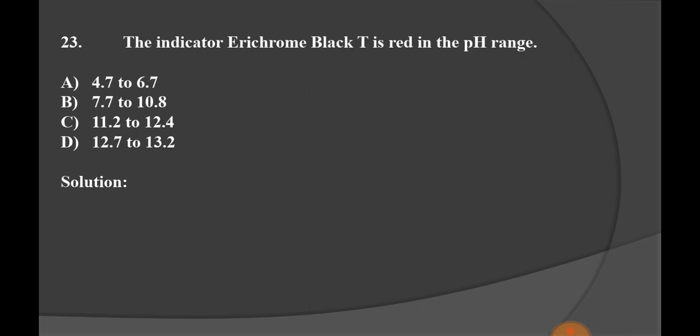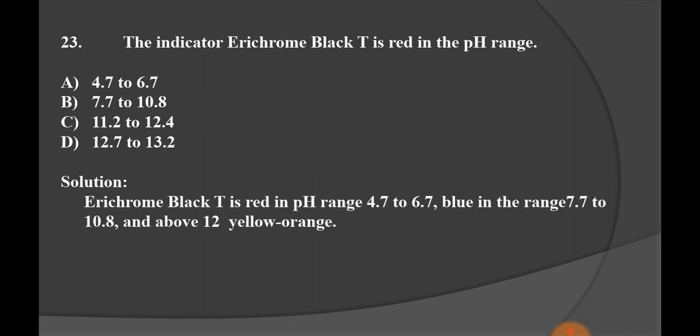The indicator Erichrome Black T is red in the pH range: Option A 4.7 to 6.7, Option B 7.7 to 10.8, Option C 11.2 to 12.4, and Option D 12.7 to 13.2. We know that Erichrome Black T is red in the pH range 4.7 to 6.7. It is blue in the range of 7.7 to 10.8, and above pH 12 it is yellow orange in color. Option A, 4.7 to 6.7 pH, is the right option where Erichrome Black T is red in color.